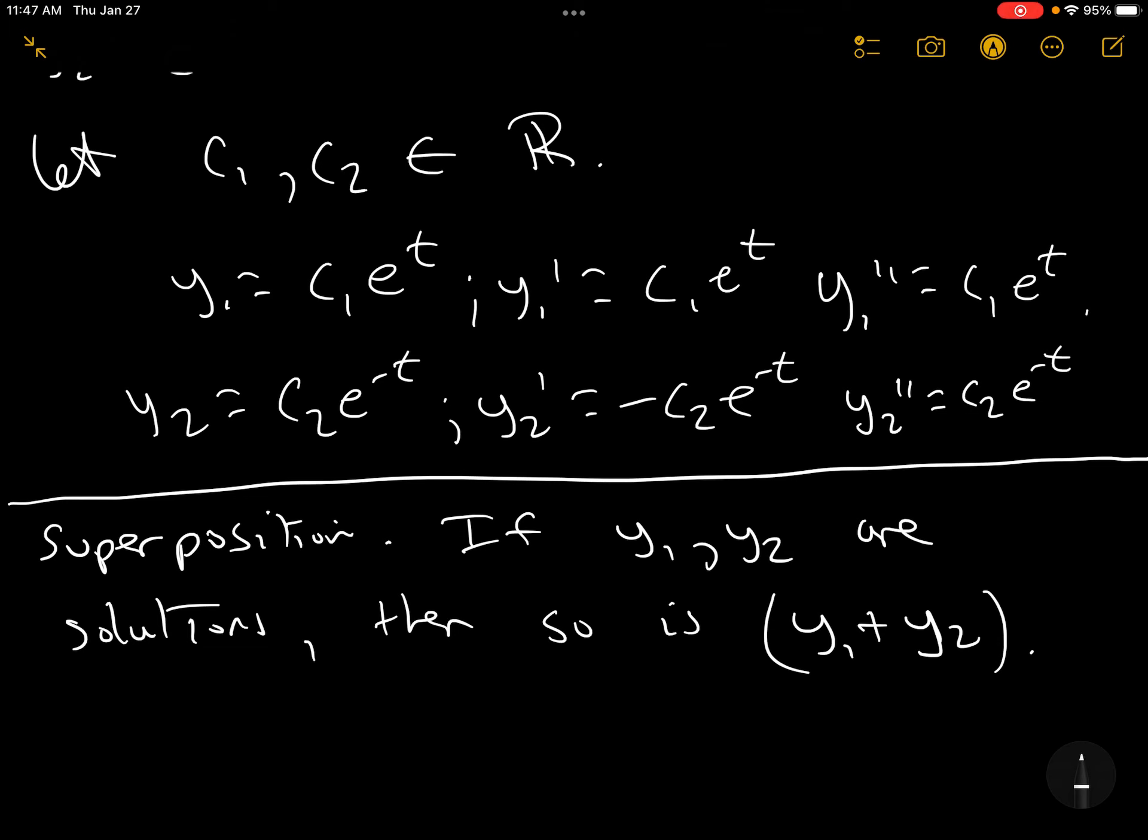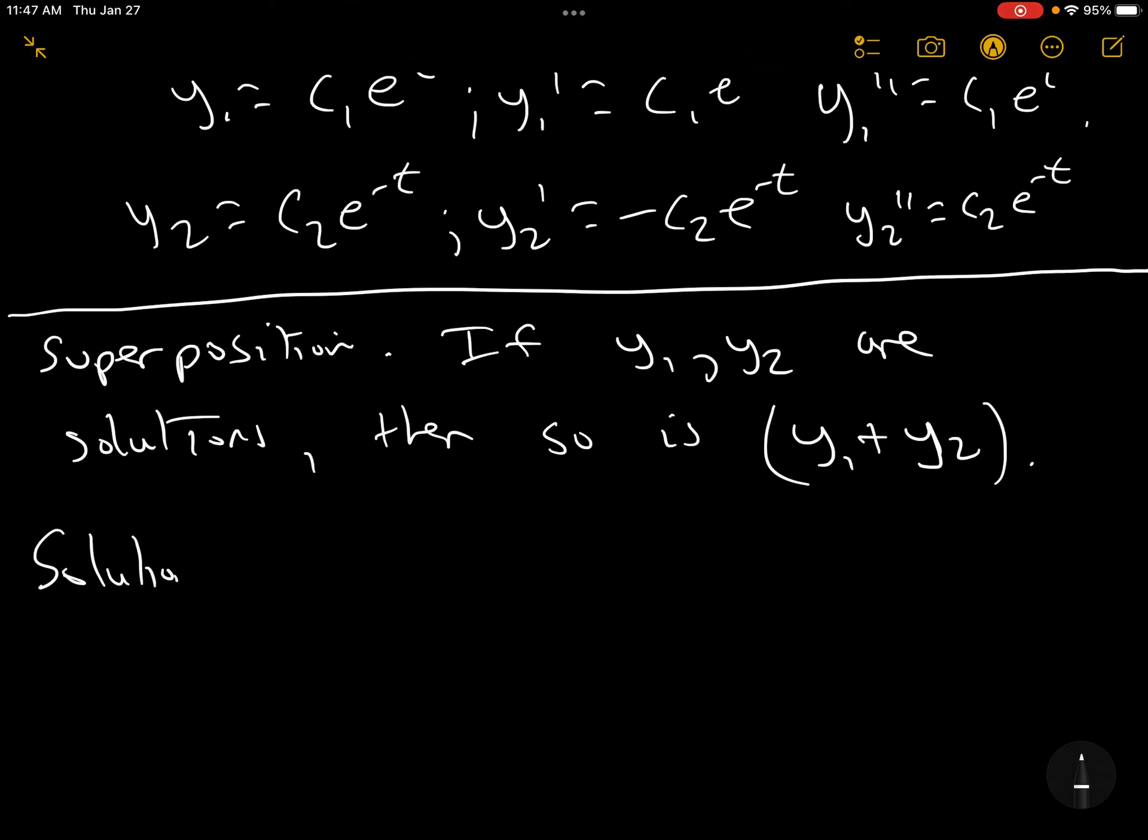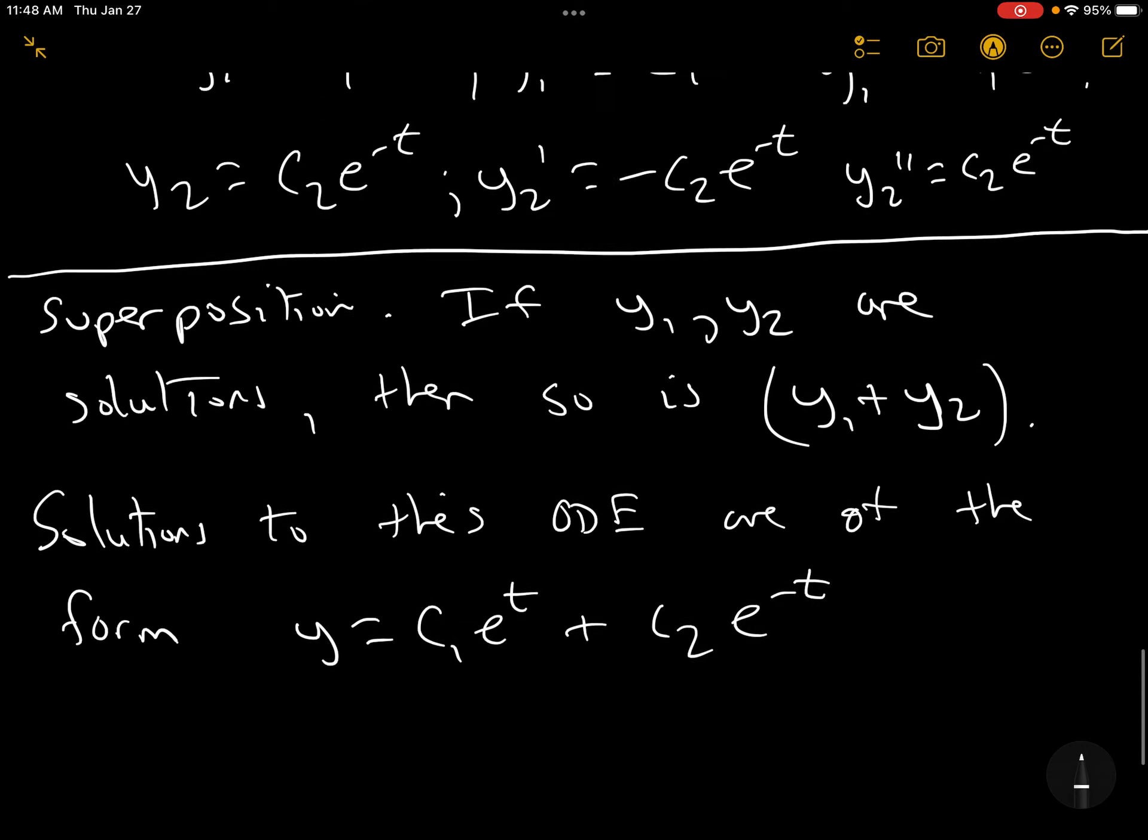If Y1 and Y2 are solutions, then so is Y1 plus Y2. And that just takes a little bit of algebra to show. We're not going to do that. So the sum of two solutions is a solution. Or as we like to say, any linear combination. So solutions to this ODE are of the form Y equals C1E to the T plus C2E to the minus T. And later on, because we have to build this, we'll show later that these are the only solutions. And you'll see why eventually. So this is the general solution.